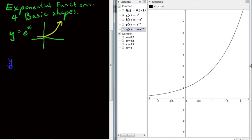Okay, now let's contrast that with y equals negative e to the x. So this is our second basic shape.